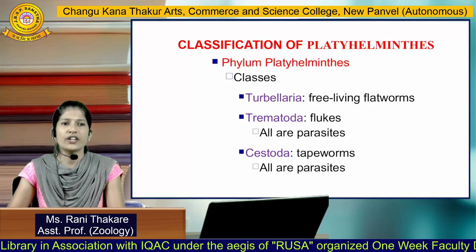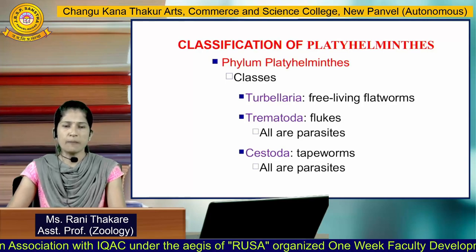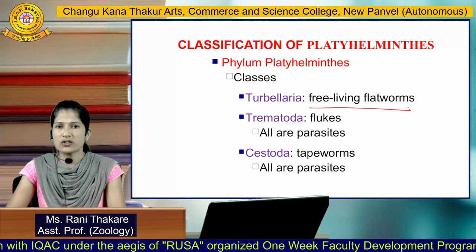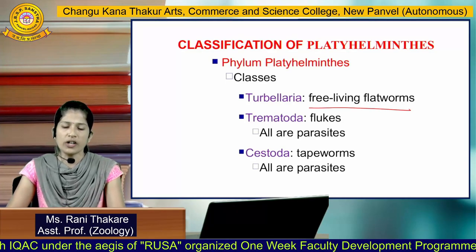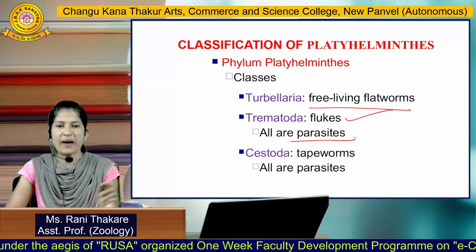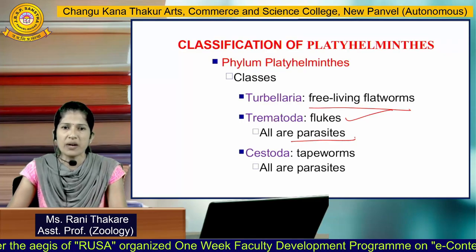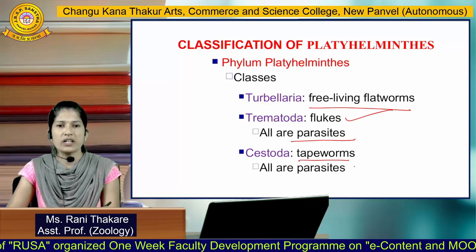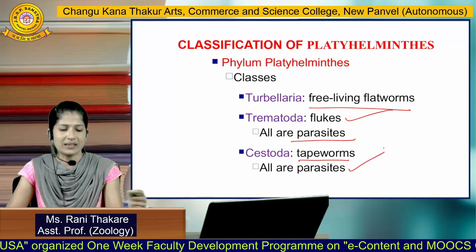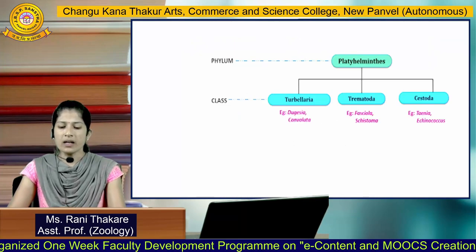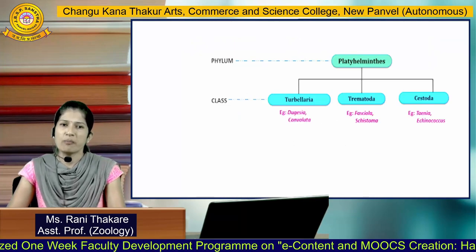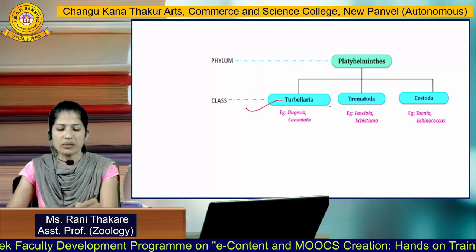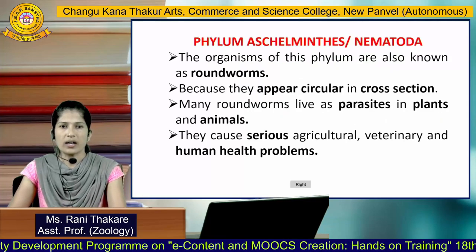Class 1, Turbellaria, in which free-living flatworms are placed. Class 2, Trematoda, in which all parasitic flukes are placed. Class 3, Cestoda, which are tapeworms — all parasitic tapeworms are placed here. So phylum Platyhelminthes has class 1 Turbellaria, class 2 Trematoda, and class 3 Cestoda.